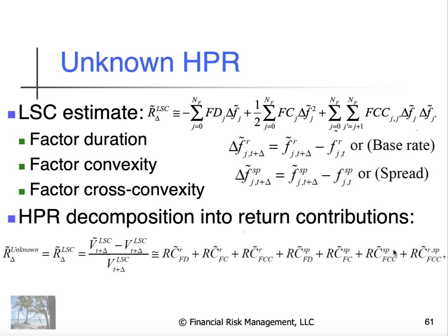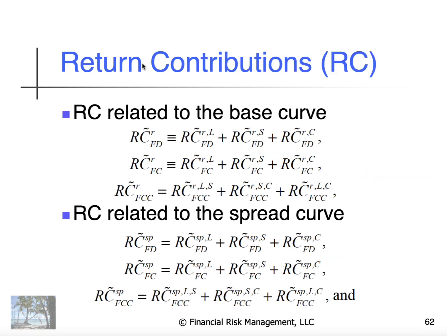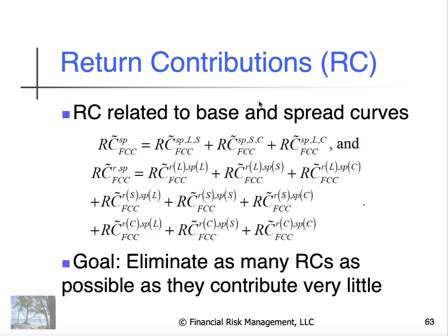Same parameters with spreads, and then the cross convexities. And so the return contributions, basically, we have level, slope, and curvature for factor duration, factor convexity, and factor cross-convexities. And then we have the spread curve, the same idea. And then we have the cross-convexities.